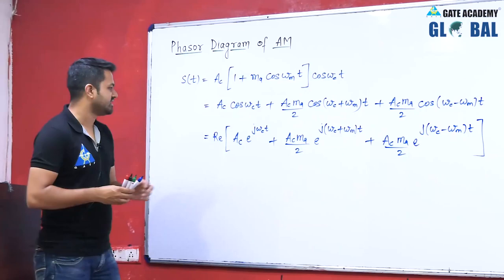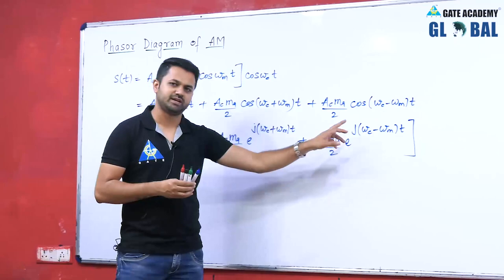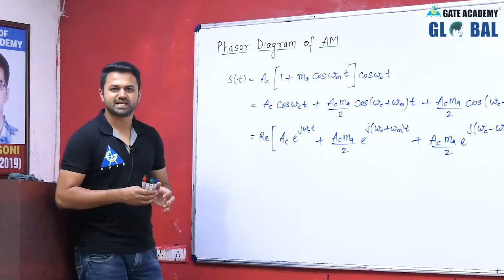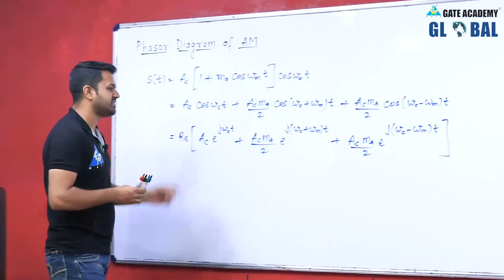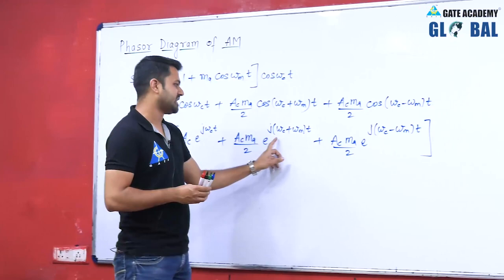We can see that in all three terms, the first one is the carrier term, the second is the upper sideband term, and the third is the lower sideband term. In all three terms there is one common factor, which is the carrier frequency term e^(jωct).